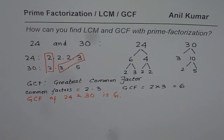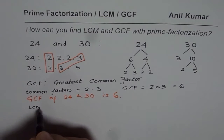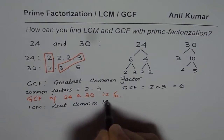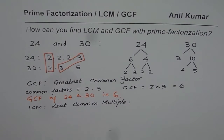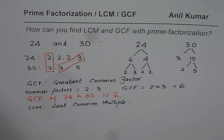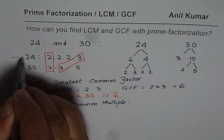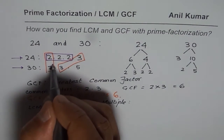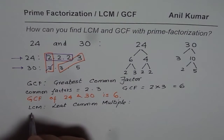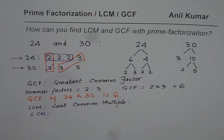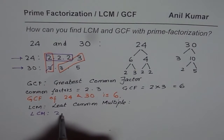Now we will find the least common multiple. LCM means least common multiple. To find LCM between these two numbers, we need to consider all factors. The method is: take the factors one by one. We begin with 2s — in which number do we have more 2s? In 24. So we take 3 twos from 24 and drop the one 2 from 30.